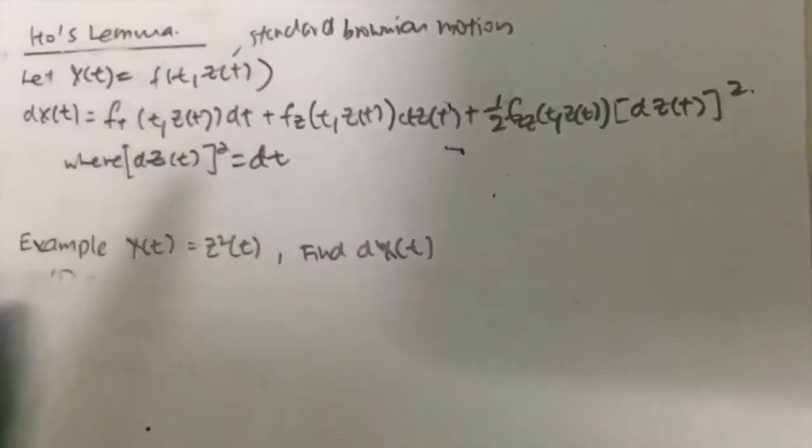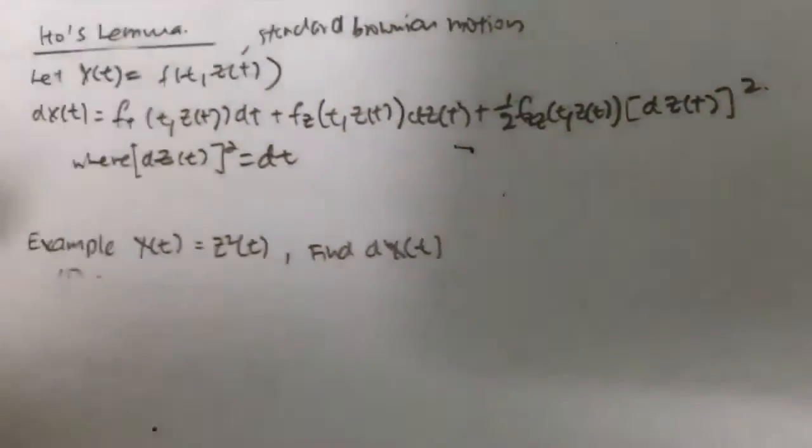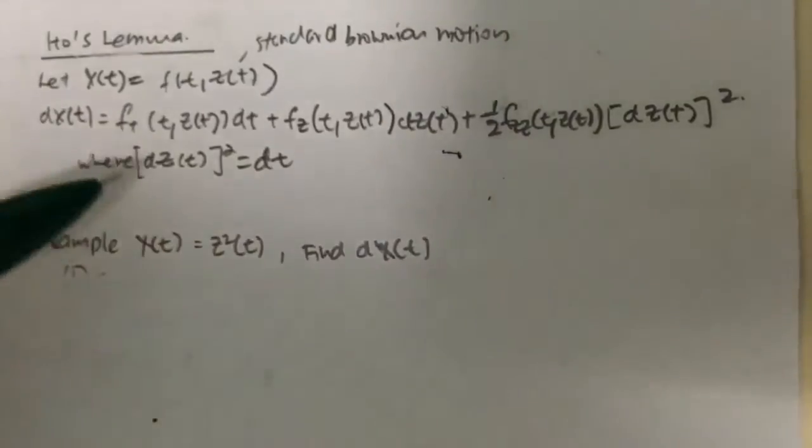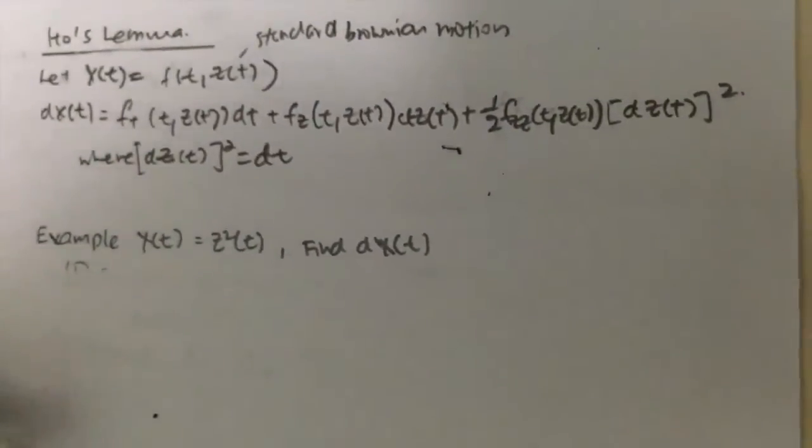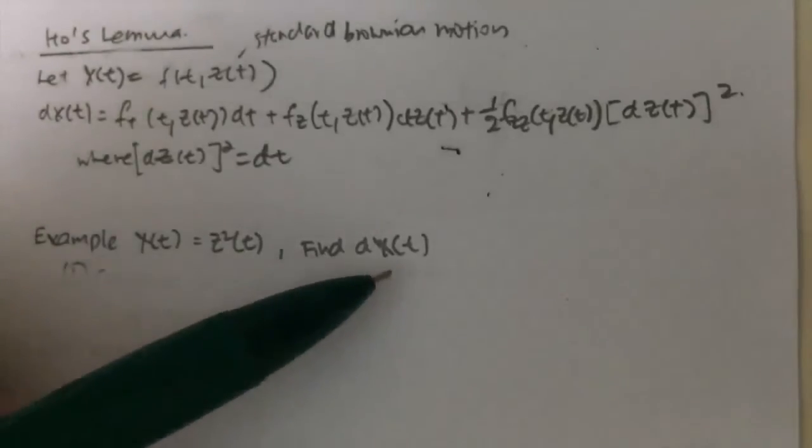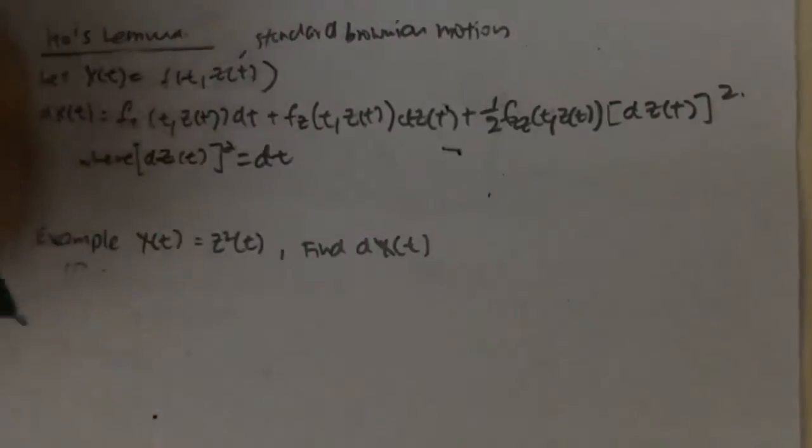So how do we go about using the Ito's Lemma to find the stochastic differential equation for X(t)? Given the example, X(t) is equal to Z squared (t), find dX(t), or the stochastic differential equation for X(t).